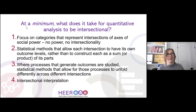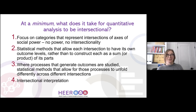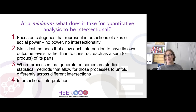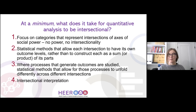At a minimum, what does it take for a quantitative analysis to be intersectional? It has to focus on categories that represent intersections of axes of social power — no power, no intersectionality. Not every interaction represents an intersection. You need statistical methods that allow each intersection to have its own outcome levels estimated independently, not as a sum of their parts through main effects regression that adds together average effects of each individual factor as though they're independent. And where processes generating outcomes are studied, your statistical methods must also allow those processes to unfold differently across different intersections.